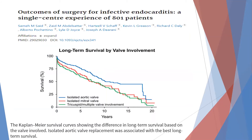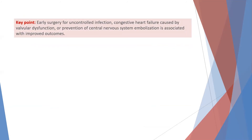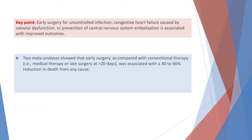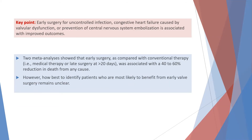A single-center experience study of 800 patients shows Kaplan-Meier survival curves demonstrating long-term survival differences based on valve involvement. Isolated aortic valve replacement is associated with the best long-term survival. Key points: early surgery for uncontrolled infection, congestive heart failure caused by valvular dysfunction, or prevention of CNS embolization is associated with improved outcomes. Two meta-analyses show early surgery compared with conventional therapy is associated with 40–60% reduction in death from any cause, though identifying which patients will most benefit from early surgery remains unclear.